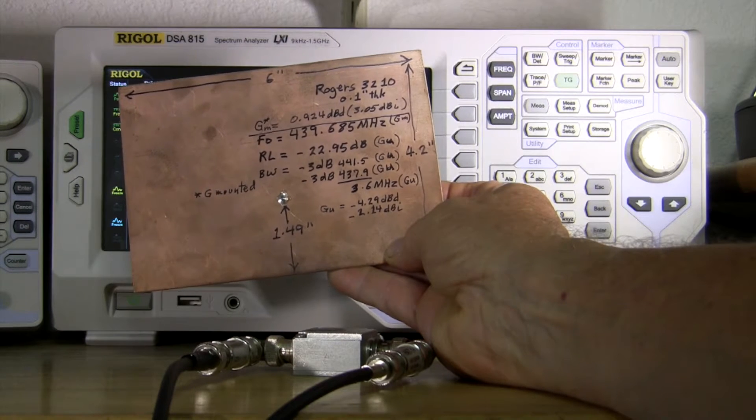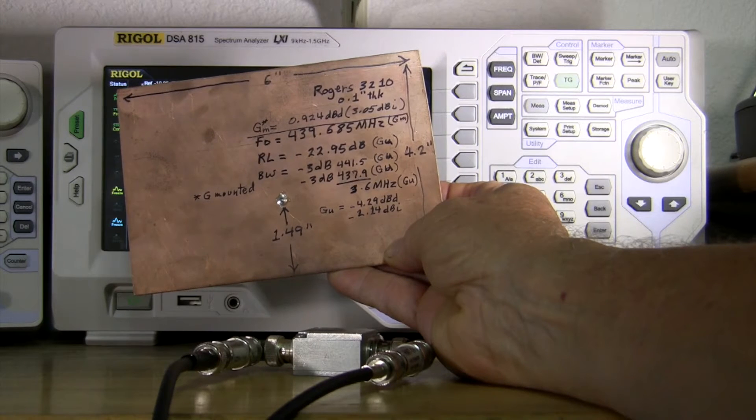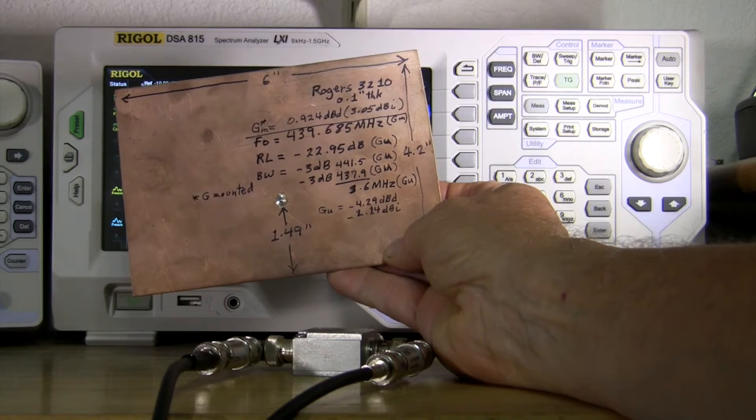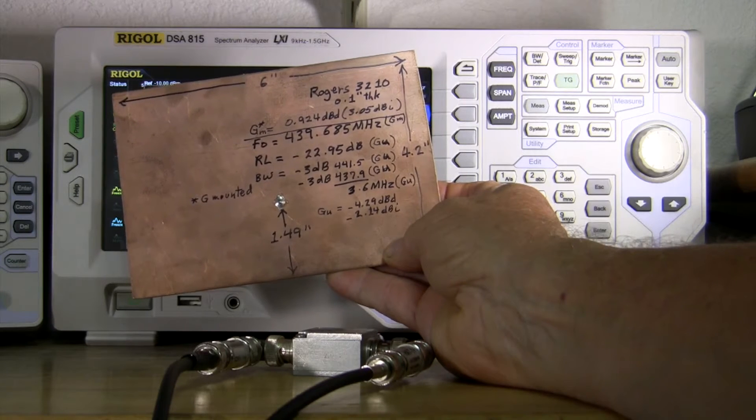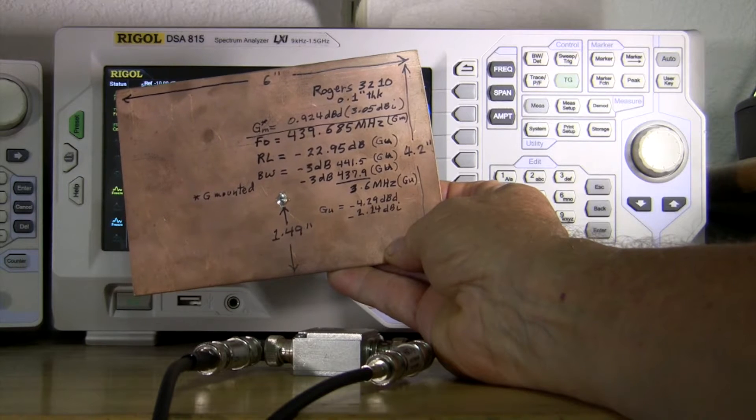When it was unmounted the gain was minus 4.3 dBd or minus 2.14 dBi. So that's the situation.